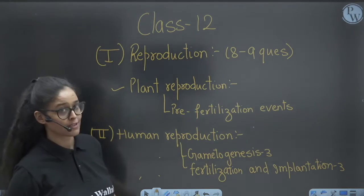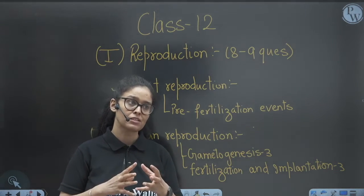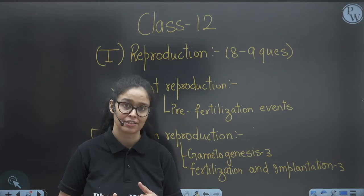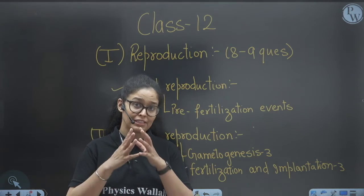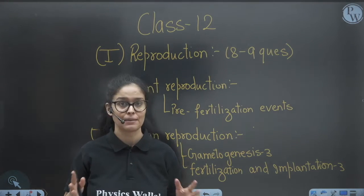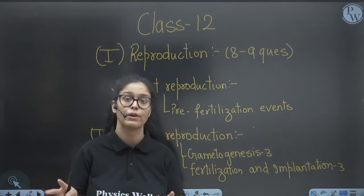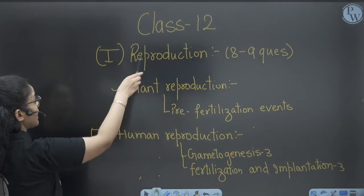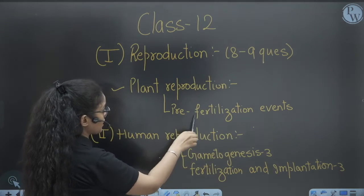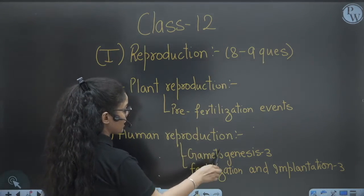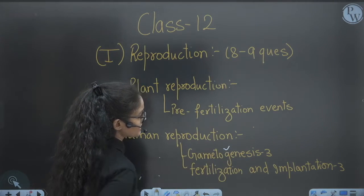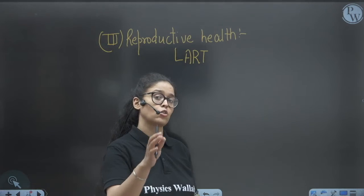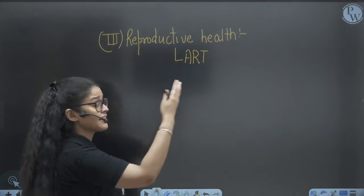Now for Class 12: some topics have one to two questions so you can choose how much weightage to give them, but the most important topics you cannot skip. Reproduction: eight to nine questions total. Plant Reproduction — pre-fertilization questions are common. Human Reproduction: Gametogenesis — three questions on average; Fertilization and Implantation — three questions on average. Reproductive Health: Assisted Reproductive Technology (ART) is a hot topic with many questions, followed by diseases of reproductive health.